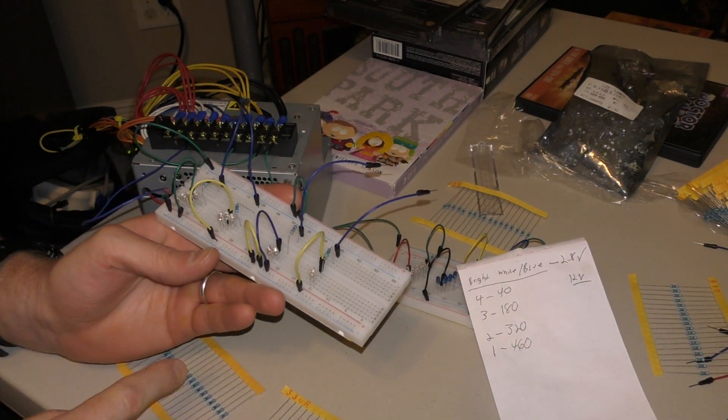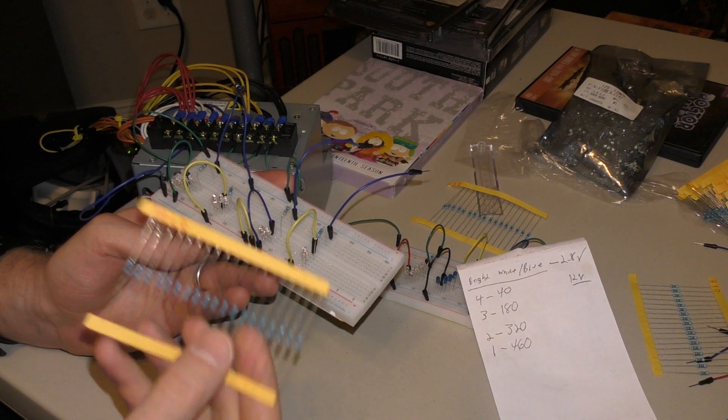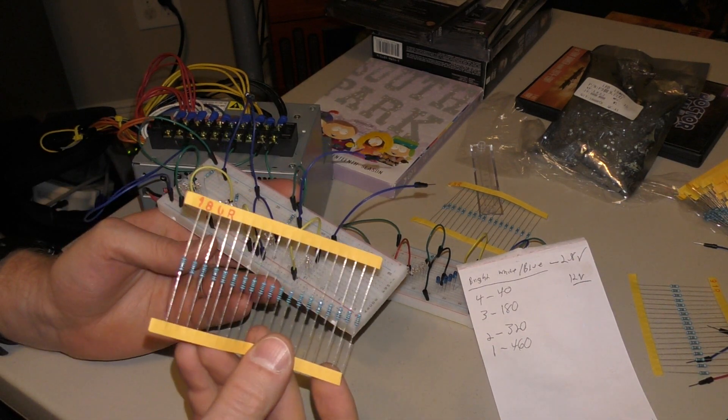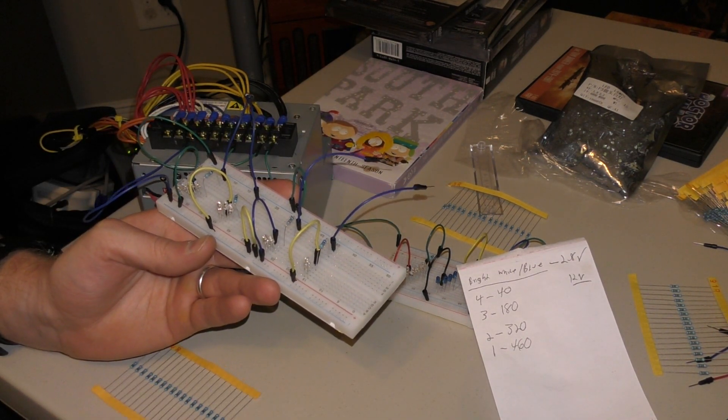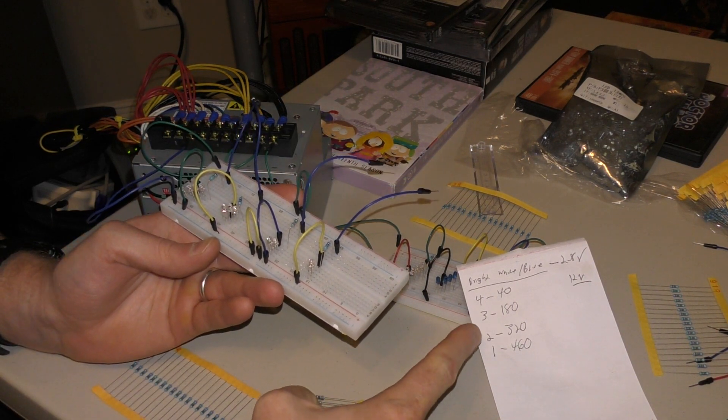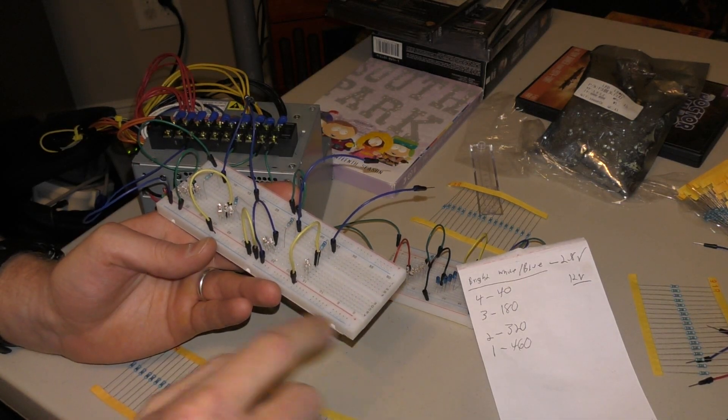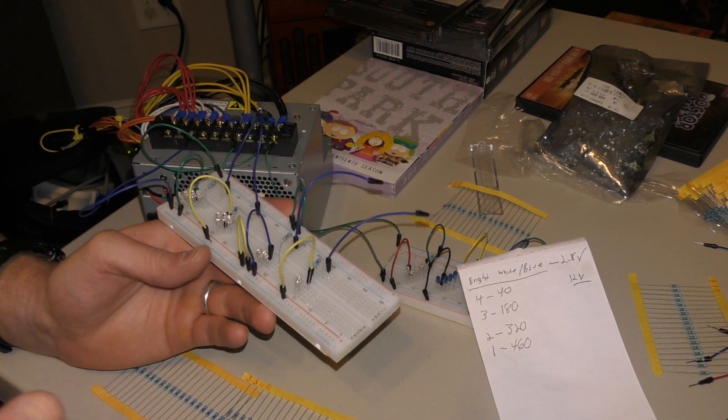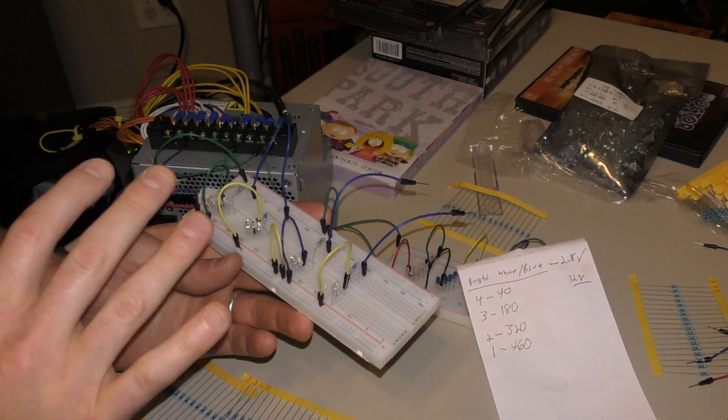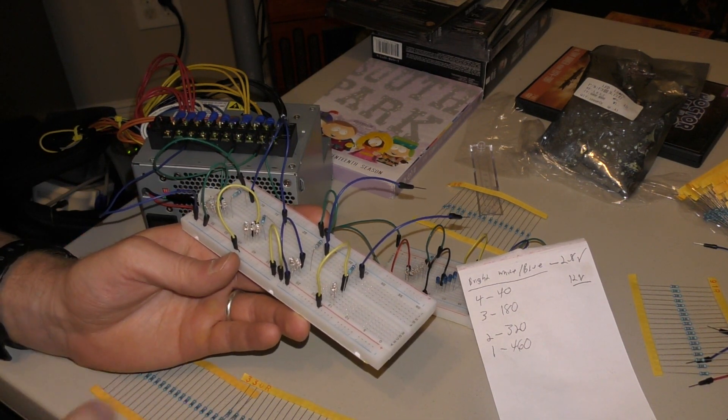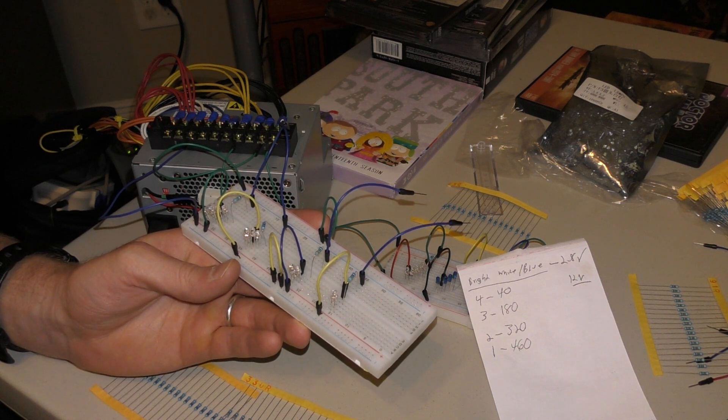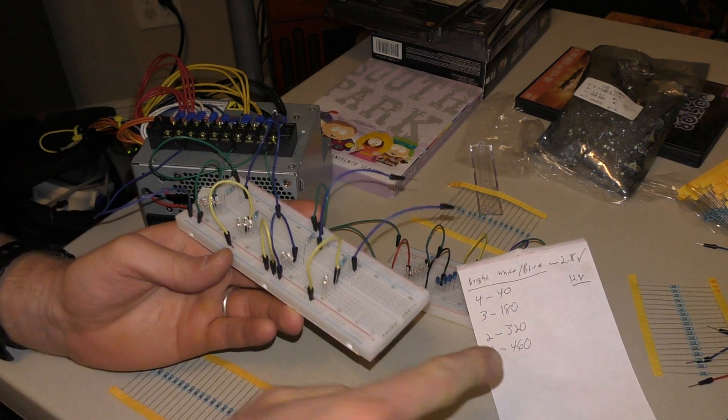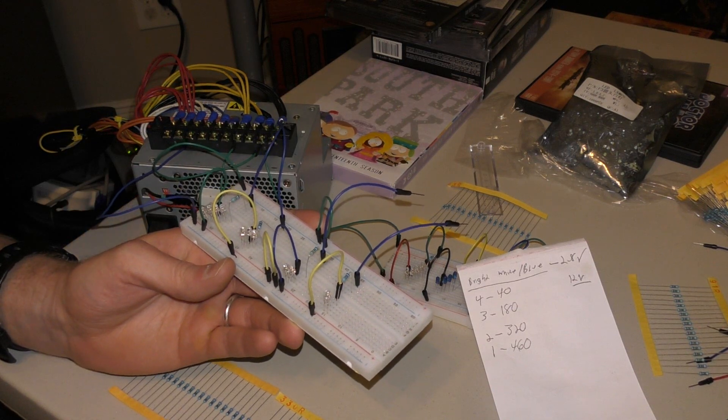This is the same as this other one. Instead of 40, I did 43. For the three of them we calculated 180 and I happen to have 180. For the two of them we calculated 320 so we got a 330 here. For the one bulb we calculated 460 and we found a 470. The bigger resistors will just dim it down. You got to use at least what we calculated here or you'll burn something out in the end, even if it doesn't happen immediately.